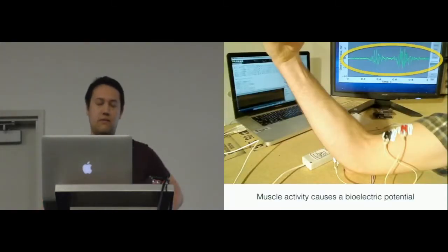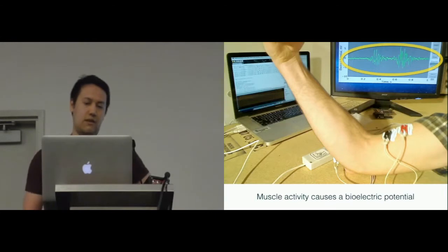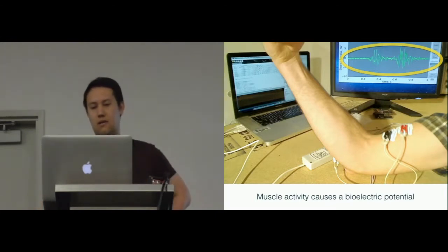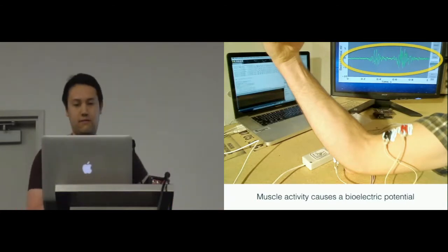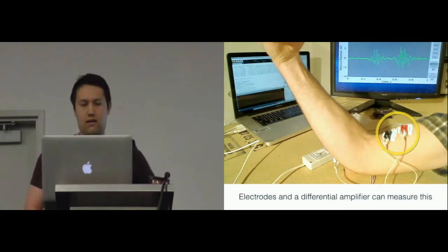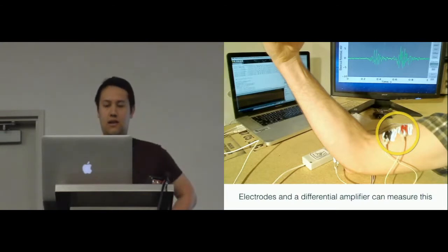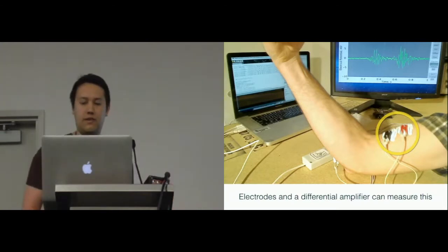To quickly explain how EMG works, muscle cells produce an electrical potential upon contraction of that muscle, which results in a signal like the one highlighted above. This is measured using electrodes which are shown here on the bicep, along with a differential amplifier.